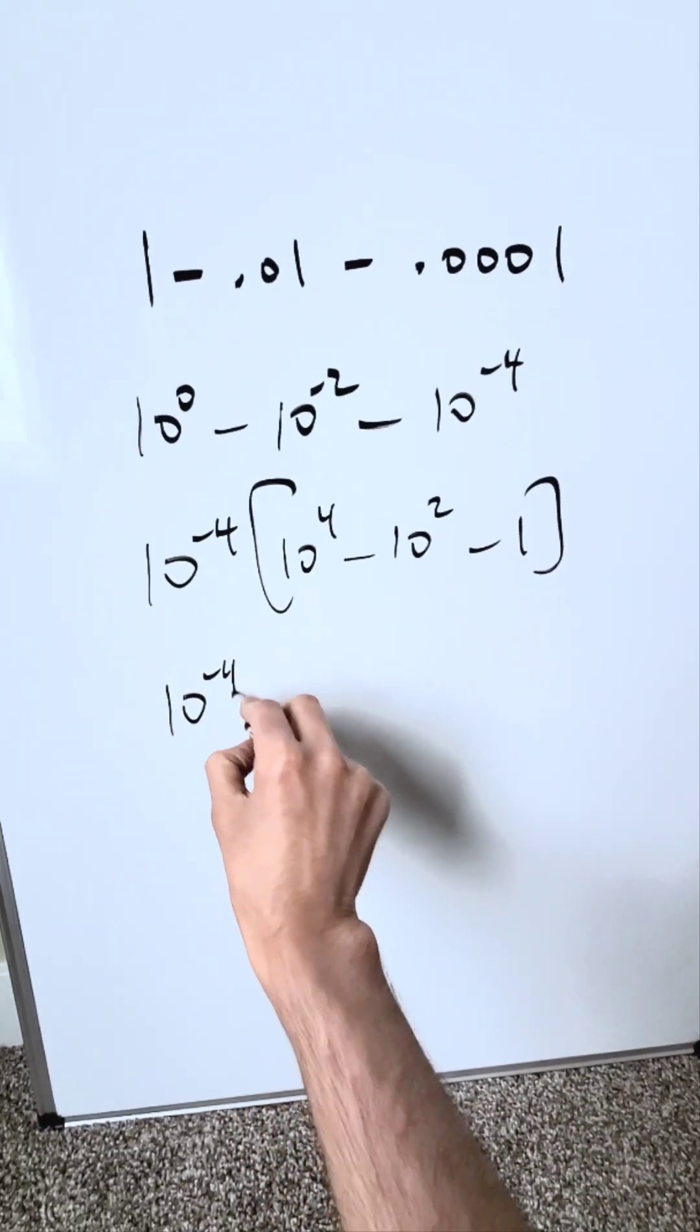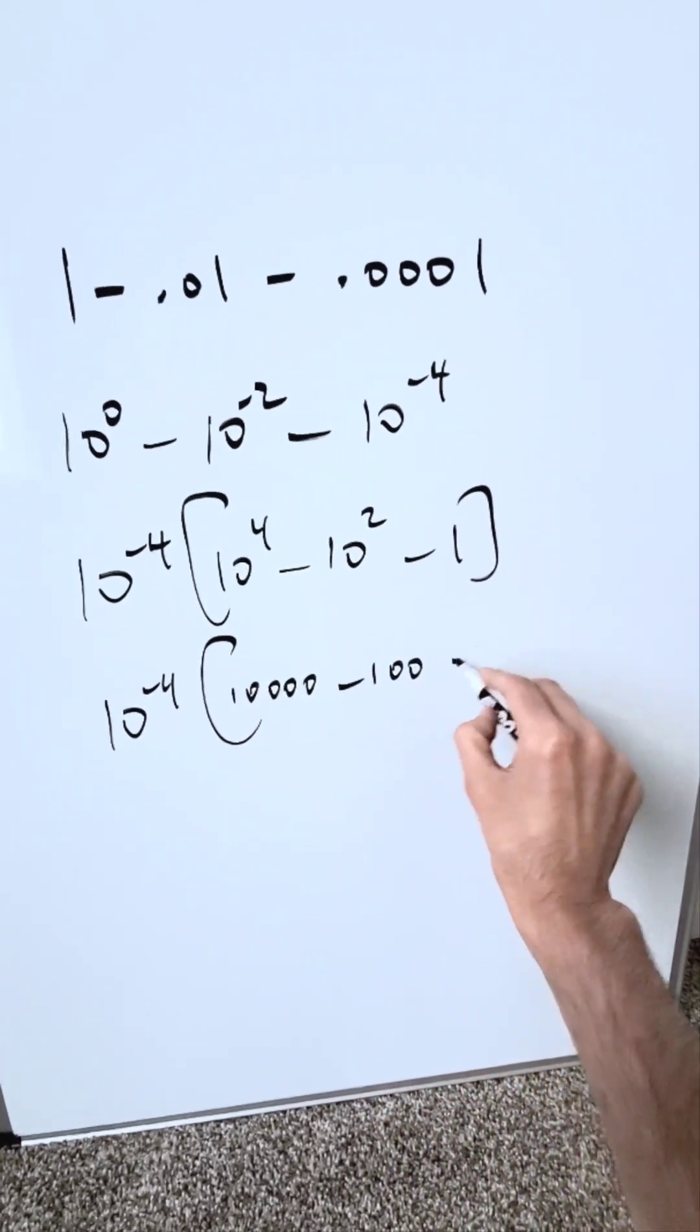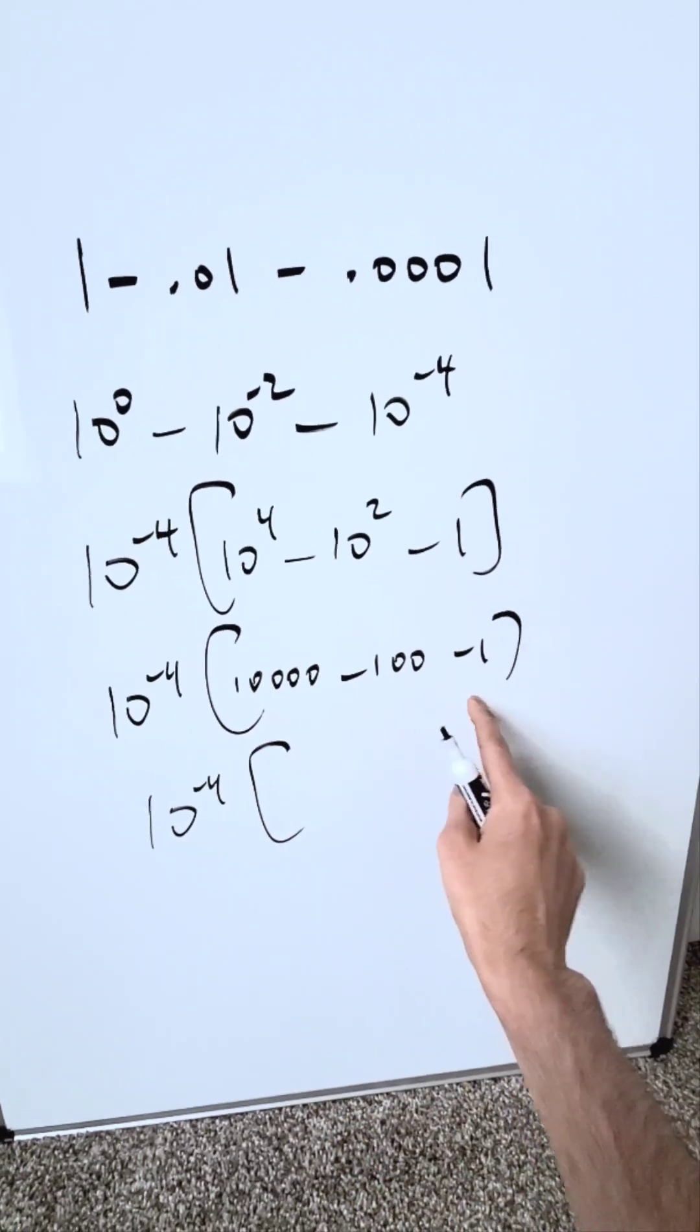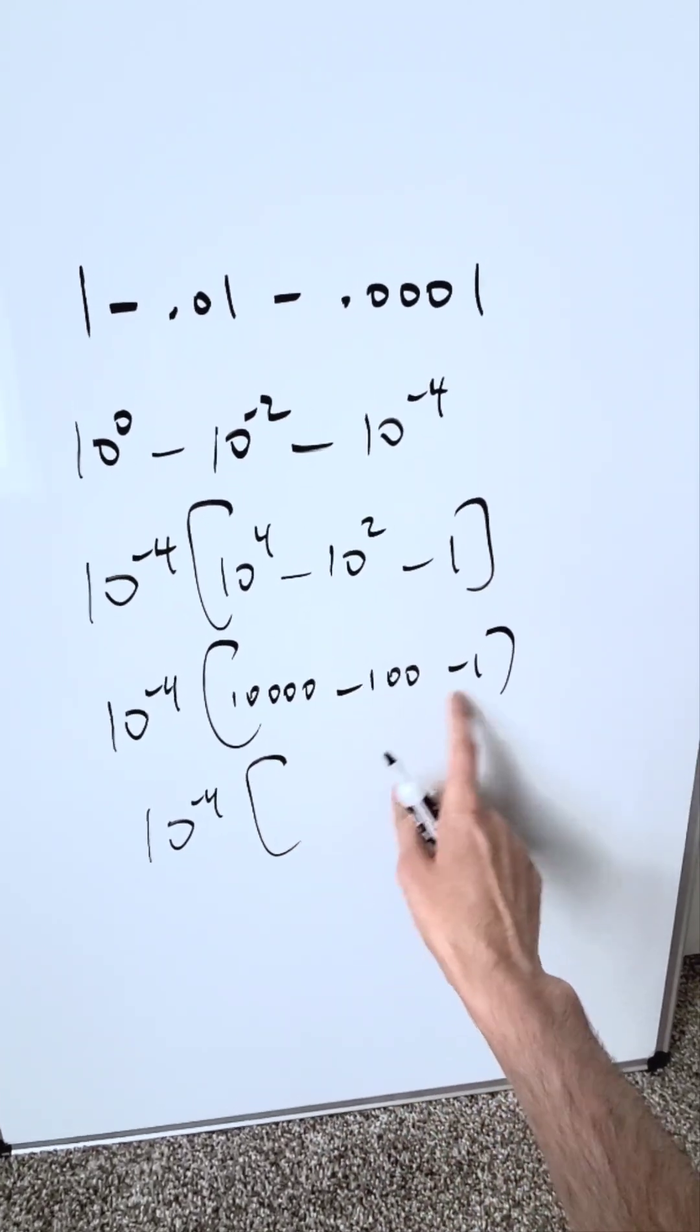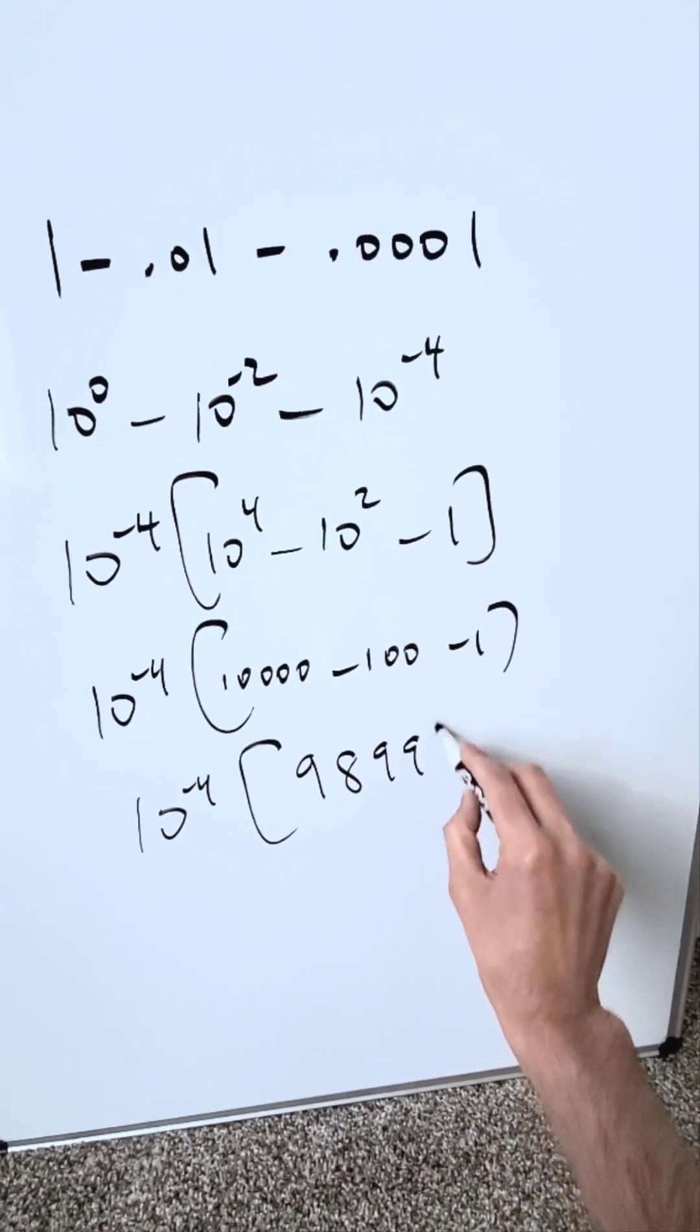I'm looking here at 10 to the power of minus 4. Here I have 10,000. Here I have 100 and minus 1. You are, in essence, now doing a simple computation. What's 10,000 minus 100 minus that? You know that to be 9,899.